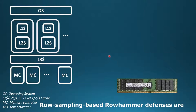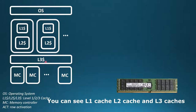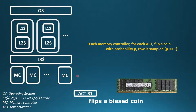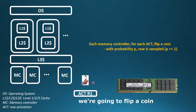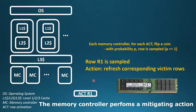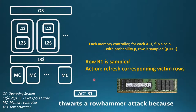Row sampling-based row hammer defenses are one of the oldest and simplest classes of defense techniques suitable for a memory controller. Here on the slide on the left, I have a simple diagram of a server equipped with multiple cores, with a memory hierarchy — L1, L2, and L3 caches — and with a few memory controllers. On each row activate, the corresponding memory controller flips a biased coin. With a low probability P, where P is much lower than 1, the row address is sampled and the row is treated as an aggressor row. In this animation, an activate goes to row 1 — we flip a coin but do not sample. The next activate goes to row 7 — not sampled. The third activate goes back to row 1, and this time the coin results in the row being sampled. The memory controller then performs a mitigating action such as refreshing the corresponding victim rows. A sufficiently high sampling rate P defeats a row hammer attack because it ensures that an aggressor row cannot escape sampling with very high probability.